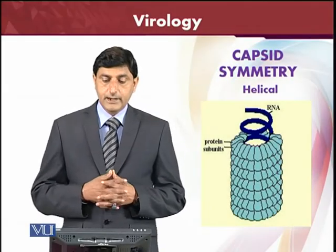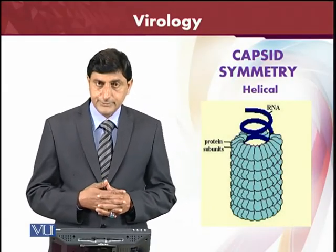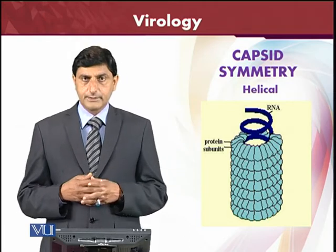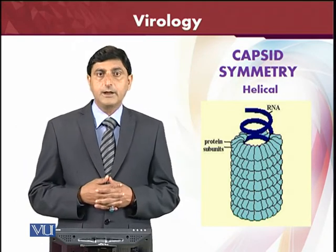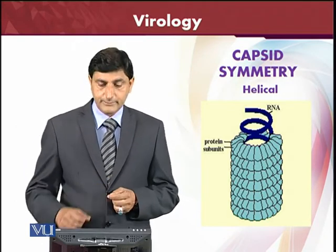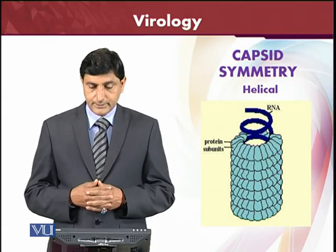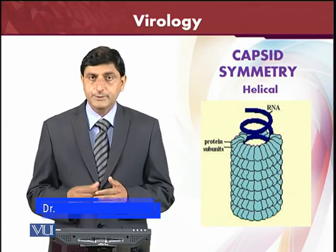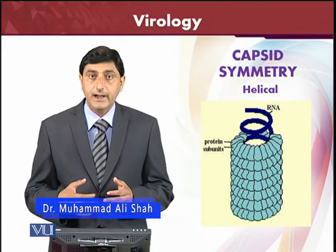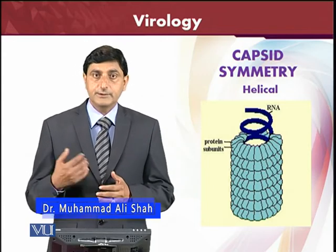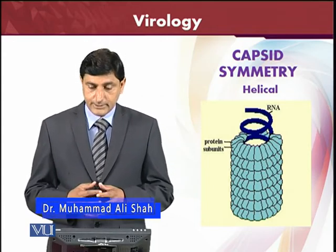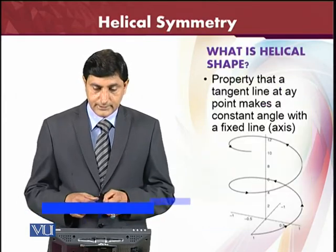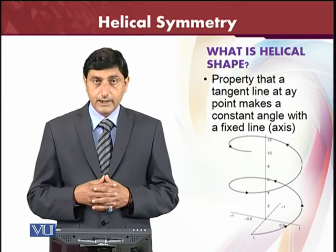Now we will study the helical symmetry in detail about the capsid — what kind of helical symmetry it looks like and how it is made up of. As it's clear from the picture given here, it is the proteinic subunits, proteinic cores, arranged in the form of a helix, and the RNA or the genetic material resides inside the helical symmetry.